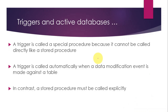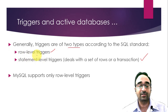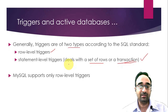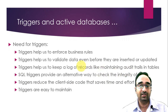There are two types of triggers: row-level triggers and statement-level triggers. Row-level triggers execute row by row — that is, whenever you insert, update, or delete one row. Statement-level triggers are associated with a set of rows or a complete transaction; for example, if you insert one hundred rows at a time and need to check something after all of them are inserted, you use a statement-level trigger. Note that MySQL supports only row-level triggers.